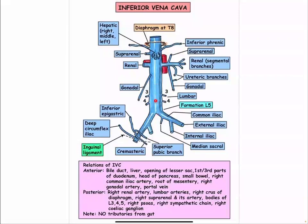Here is a better image showing the IVC and its tributaries. These are the internal and external iliac veins, the third and fourth lumbar veins, the right gonadal, the right renal, the suprarenal or adrenal, the inferior phrenic, and the right, middle, and left hepatic veins. To the left, the inferior phrenic vein drains into the left gonadal, and the right renal vein receives the suprarenal and gonadal veins. The first and second lumbar veins drain into the azygos vein, and the fifth lumbar vein bilaterally drains into the lateral sacral and iliolumbar vein.